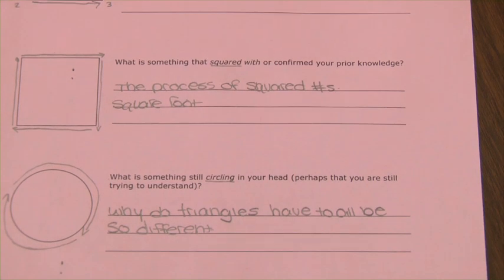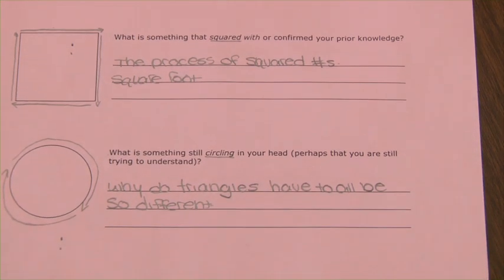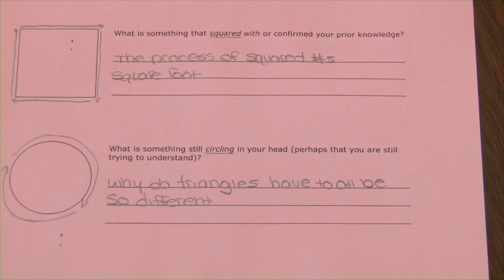The circle piece is probably the most useful — it's something they didn't understand. As a teacher, you're constantly wondering if they got it or not. And if they didn't, what piece did I not explain very well, or do I need to be more specific about? That's what I like about it — it just kind of tells me where they're at.